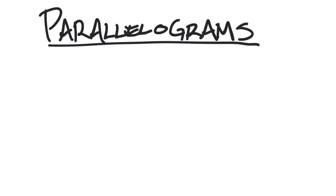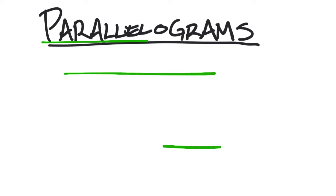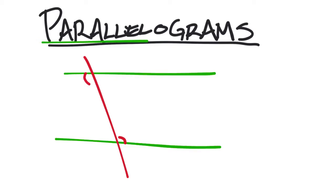Parallelograms — this is a new word for us. There is a word that's familiar in here though: parallel. We talked about parallel lines last time. These two lines in green are parallel. If you've got a transversal that goes through these, it creates angle relationships that are congruent, which are very important for us.